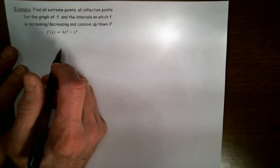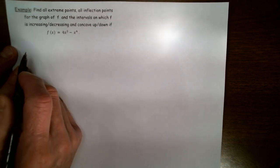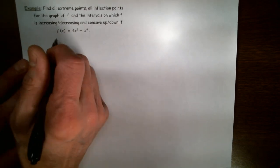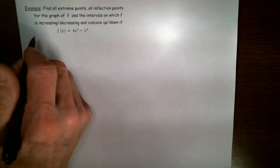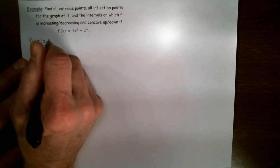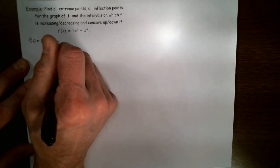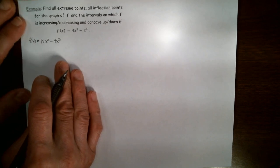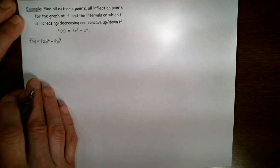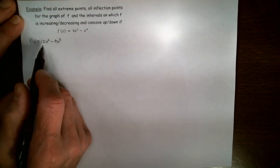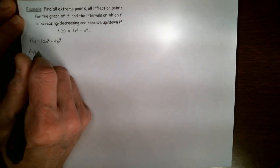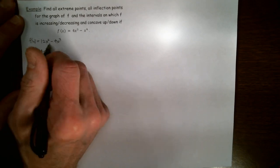The first step in this graphical analysis problem is to compute the first derivative. That's simple to do using the power rule: f'(x) = 12x² - 4x³. Next, we factor completely the formula for f'. The greatest common factor is 4x², so f'(x) = 4x²(3 - x).